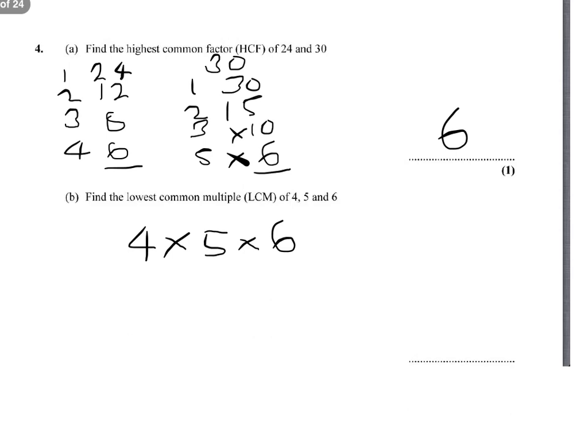Now you can see that 2 goes into 4 and 6. So if we divide by the 2, we will find the lowest common multiple.